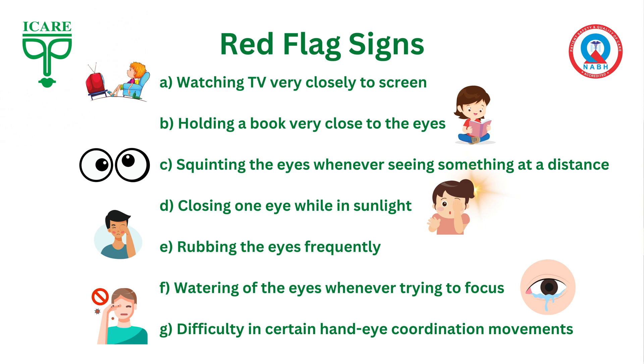These are indicators that the child would need an eye checkup by a pediatric ophthalmologist. Even if the child does not have any of these issues, what is recommended is a routine eye screening at about 6 months of age, then at 1 year of age, and then a thorough eye evaluation between 2 to 3 years of age. So do take care of the eye health of your children by getting regular routine checkups done.